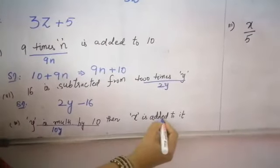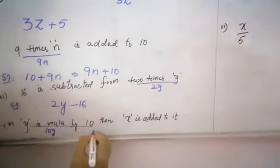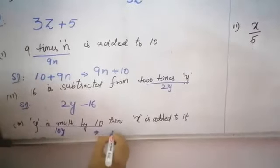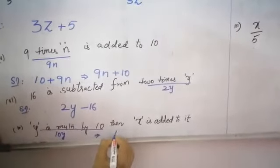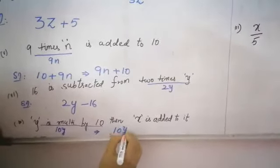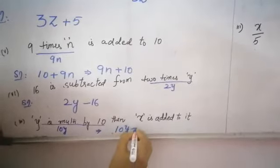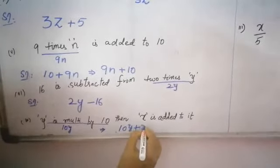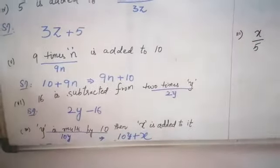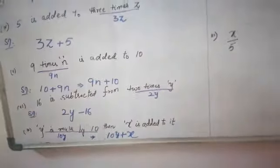Y is multiplied by 10, so it becomes 10Y. Then X is added to it. So what is the expression, children? It becomes 10Y plus X.